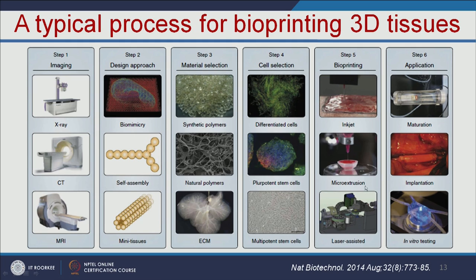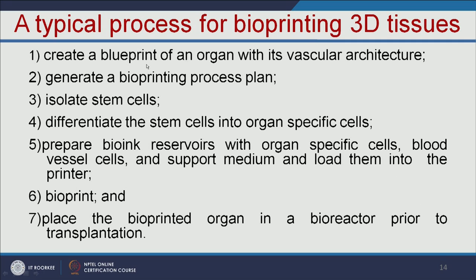Once the particular organ is printed, it is placed in a bioreactor and allowed to mature. Once matured in the presence of chemical and mechanical signals, the organ is tested in the bioreactor to check whether it is performing its function properly, and then it can be transplanted to the patient. In summary, the steps are: creating a blueprint of the organ with its vascular architecture, generating a bioprinting process plan, isolating stem cells, differentiating stem cells into organ-specific cells, preparing bio-ink reservoirs with organ-specific cells, blood vessels and support medium, printing the complete organ, and then placing the bioprinted organ in a bioreactor prior to transplantation.